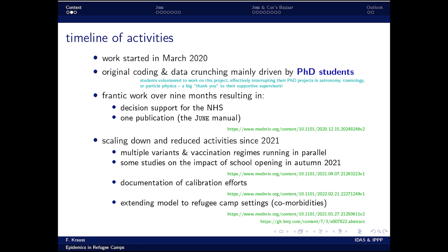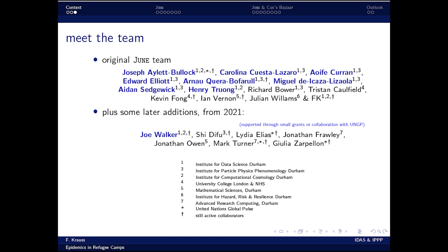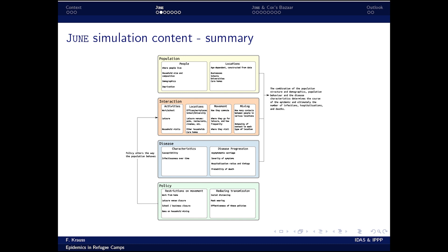The students eventually left because they finished their PhDs and went on to postdocs. We scaled down activities and most of the results I'll show are from the back end of that period. A couple of names: everyone in blue is a student and everyone in black was pretty much useless — that specifically includes myself. I want to make two exceptions: Kevin Fong and Ian Vernon, who actually helped us quite a lot in different ways.